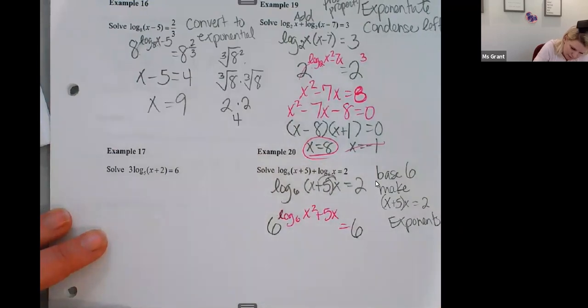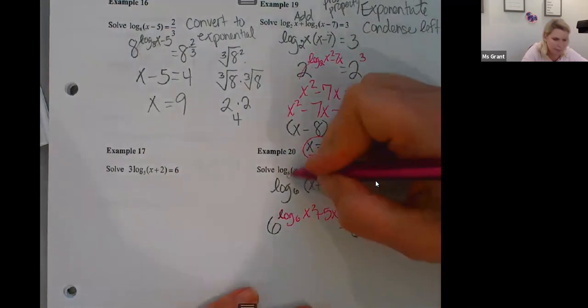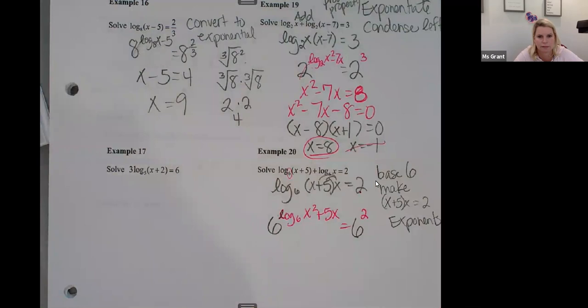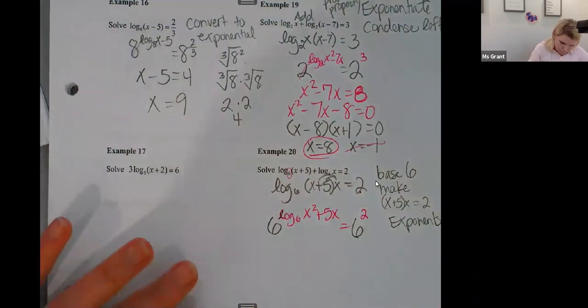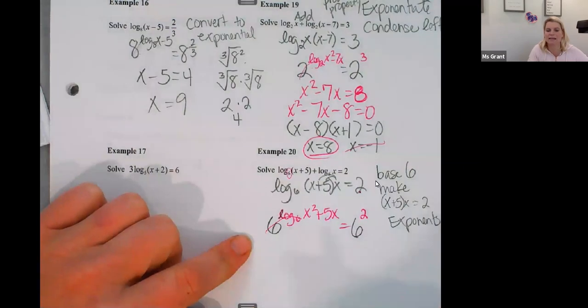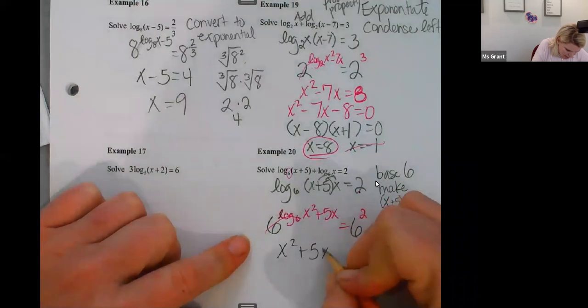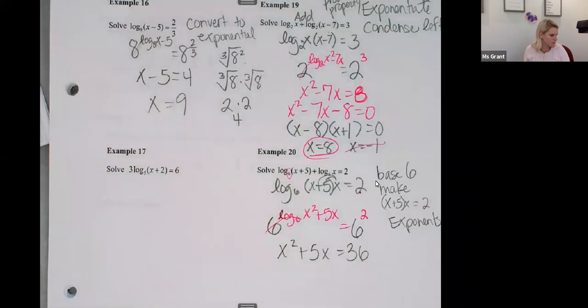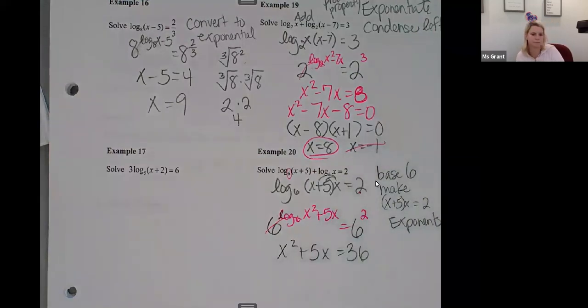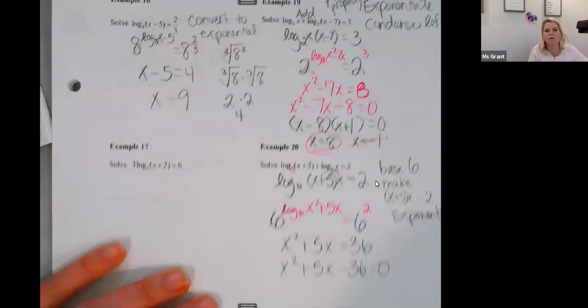I'll do it again like I did the last one. Six raised to the, sorry. Log base six of X squared plus five X. Equals six to the second power. The numbers become the exponents. The left side becomes an exponent and the right side becomes the exponent. The base is six because that's what I was given in the original problem. Base six. Six. And the reason I do that is because I need to cancel out the log. This six raised to the power of log six. That goes away. They undo each other. X squared plus five X equals 36. Six squared is 36.